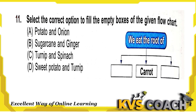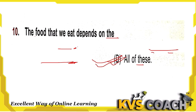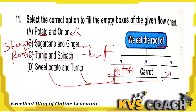Question 11: Select the correct option to fill the empty boxes of the given flow chart — we eat the root of what plants? Potato is a root — correct; onion is not a root plant — wrong. Sugarcane is a stem, not a root. Spinach is a leaf, not a root. Turnip and sweet potato are both roots, so option D — turnip and sweet potato — is the right answer.